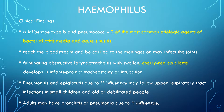H. influenzae type B and pneumococci are the two most common etiologic agents for bacterial otitis media and sinusitis. H. influenzae can reach the bloodstream and be carried to the meninges and may infect the joints causing septic arthritis. It can also cause fulminating obstructive laryngotracheitis with swollen cherry-red epiglottitis developing in infants, which may lead to tracheostomy or even intubation. Pneumonitis and epiglottitis due to H. influenzae may follow upper respiratory tract infections in children and in immunocompromised or debilitated people.